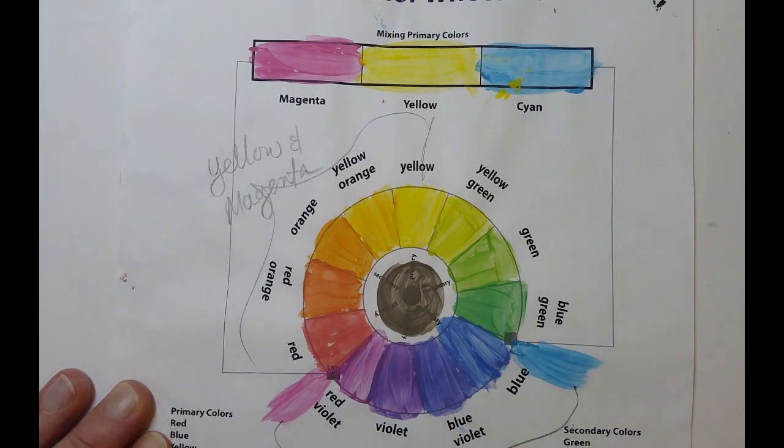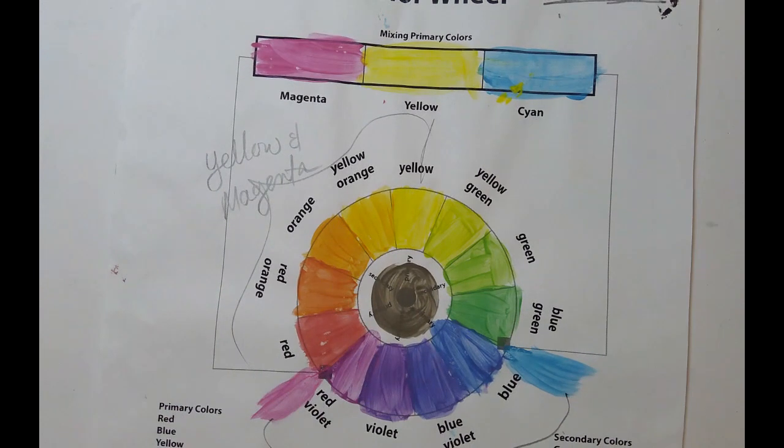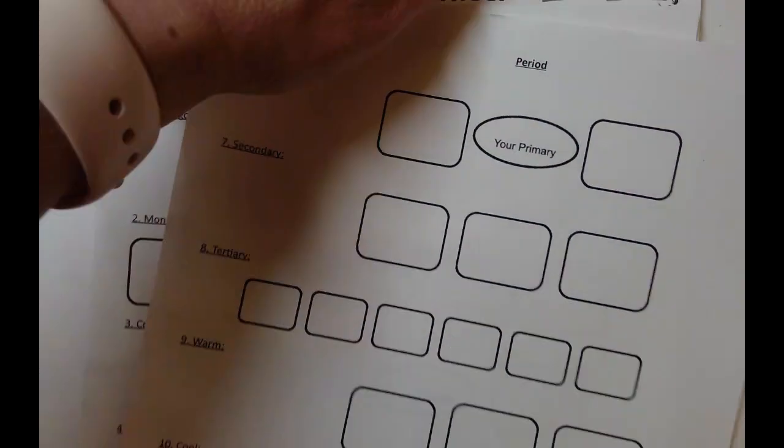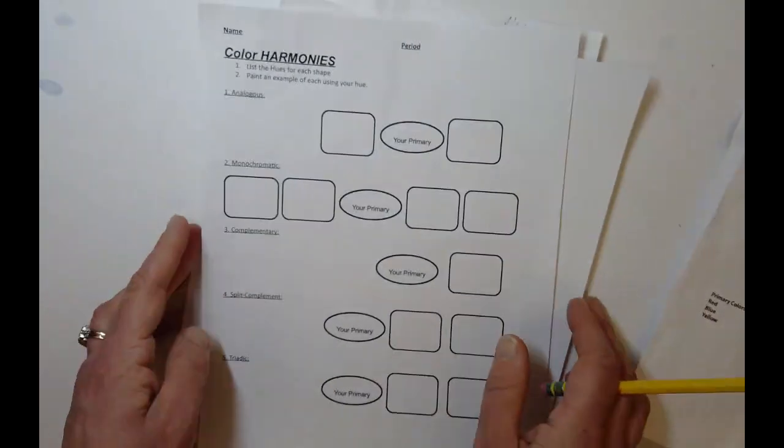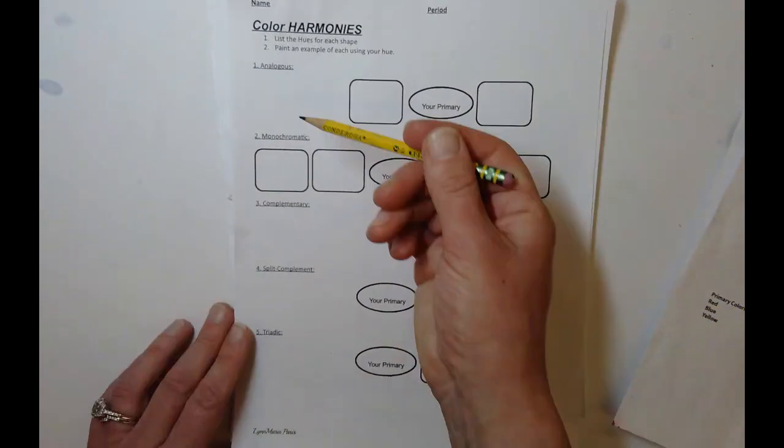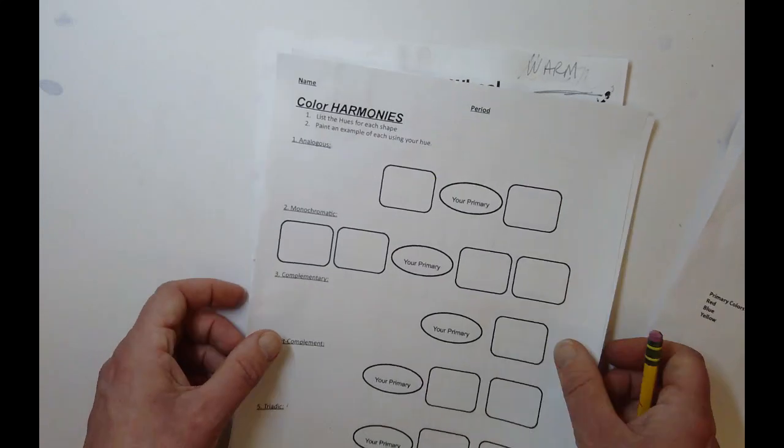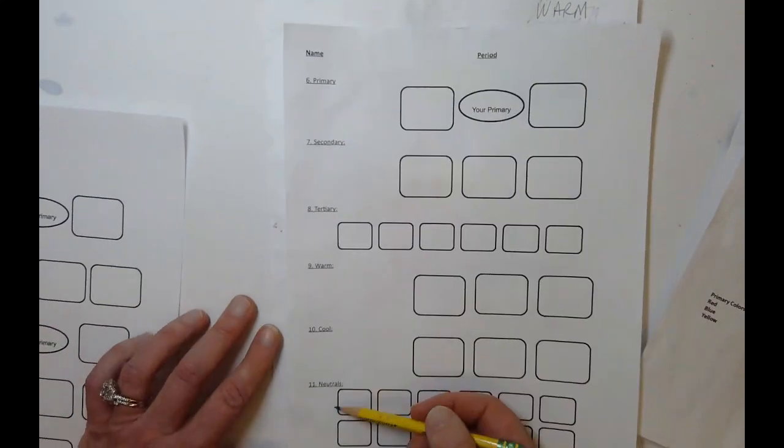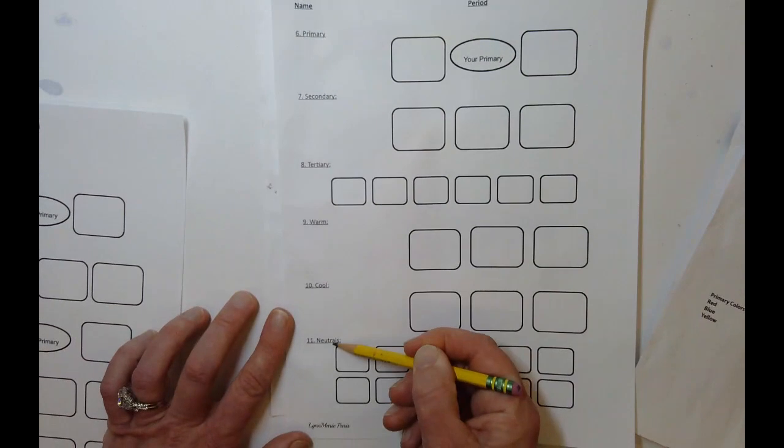So for our color theory charts, you're going to use these to paint these handouts. So this is one through five. It starts off with color harmonies with analogous, and then on the next page, six through 11, starting with primary and going down to neutrals.